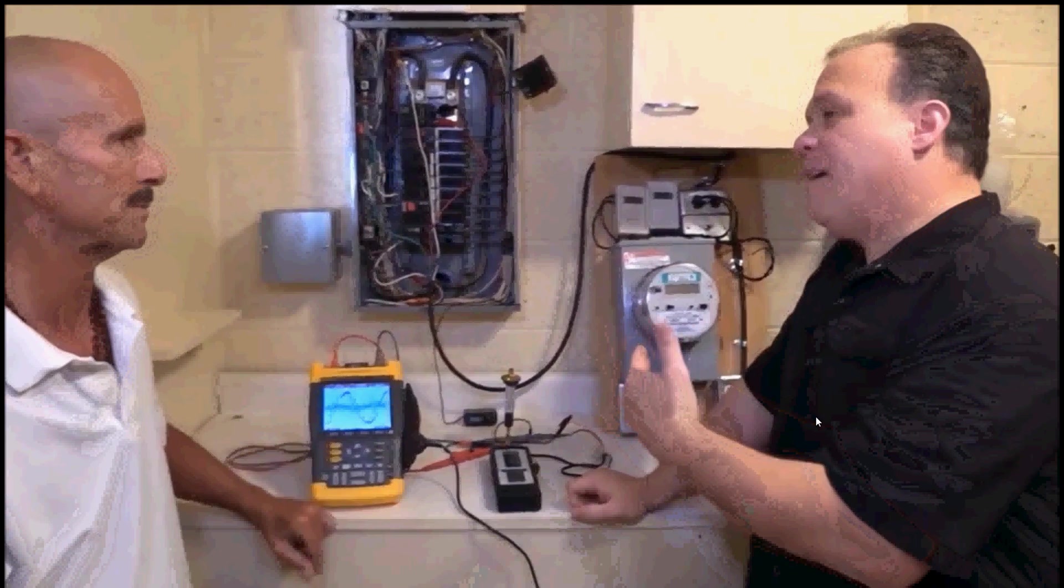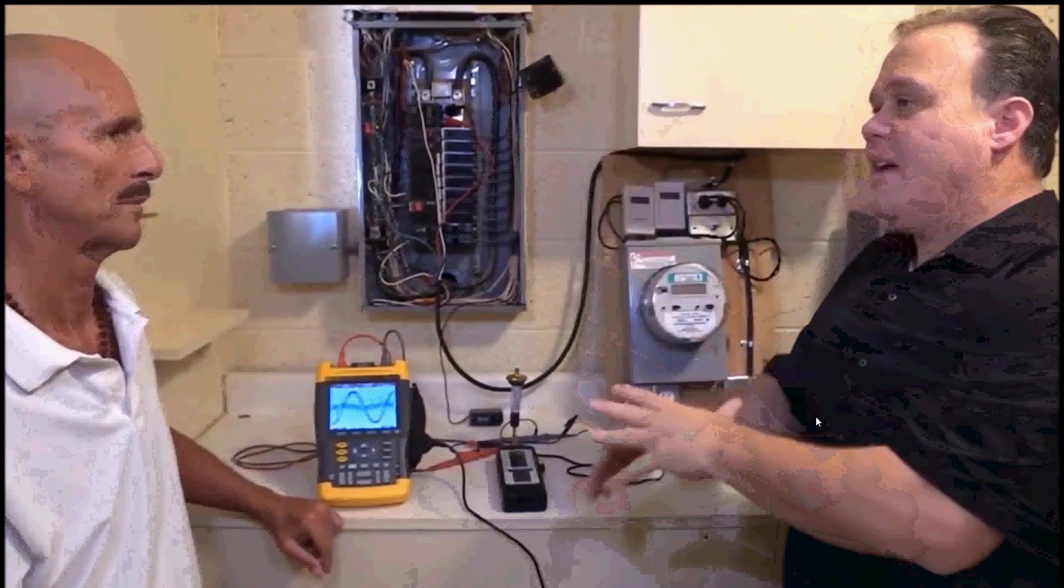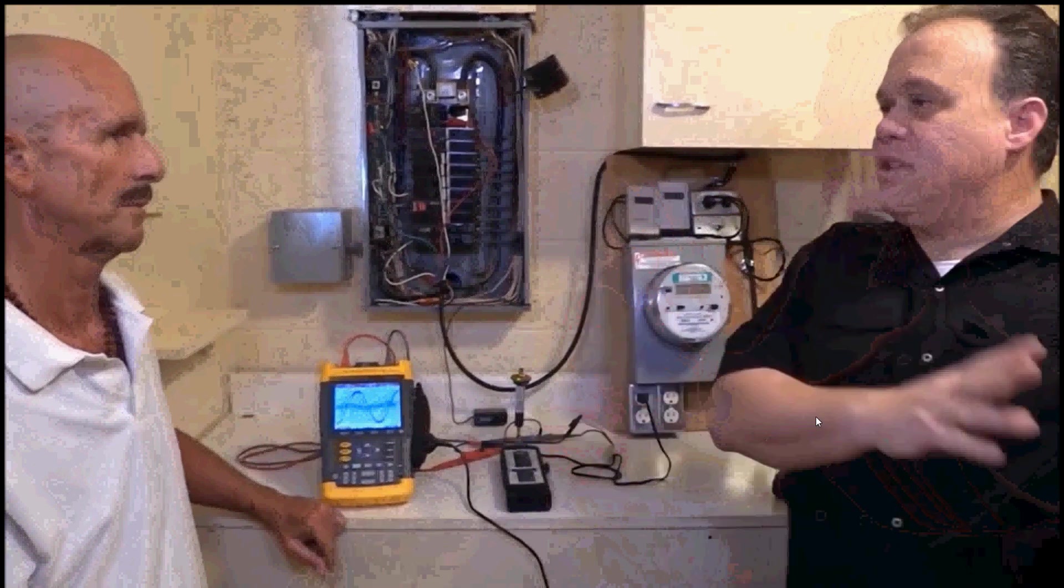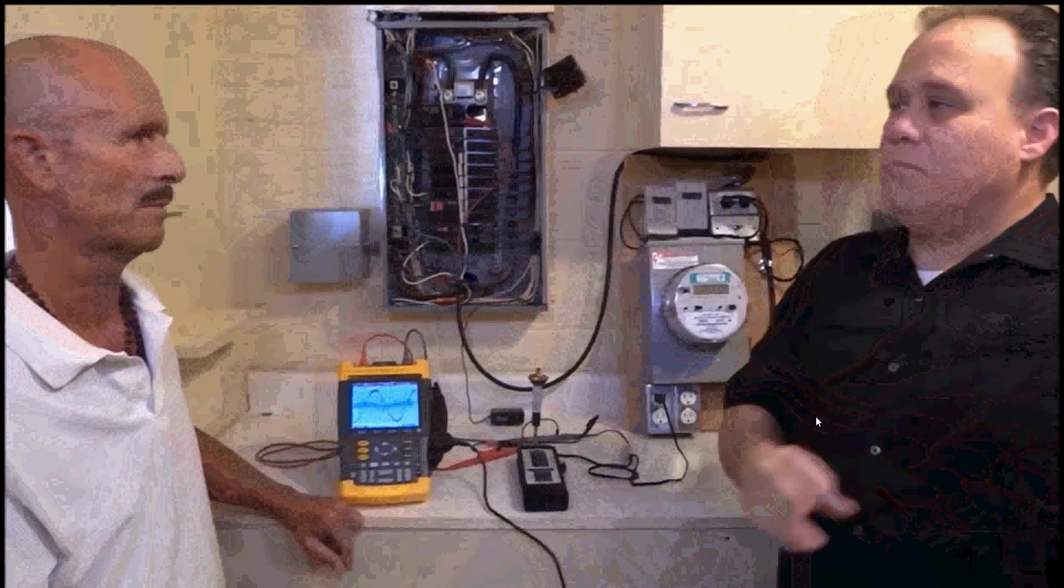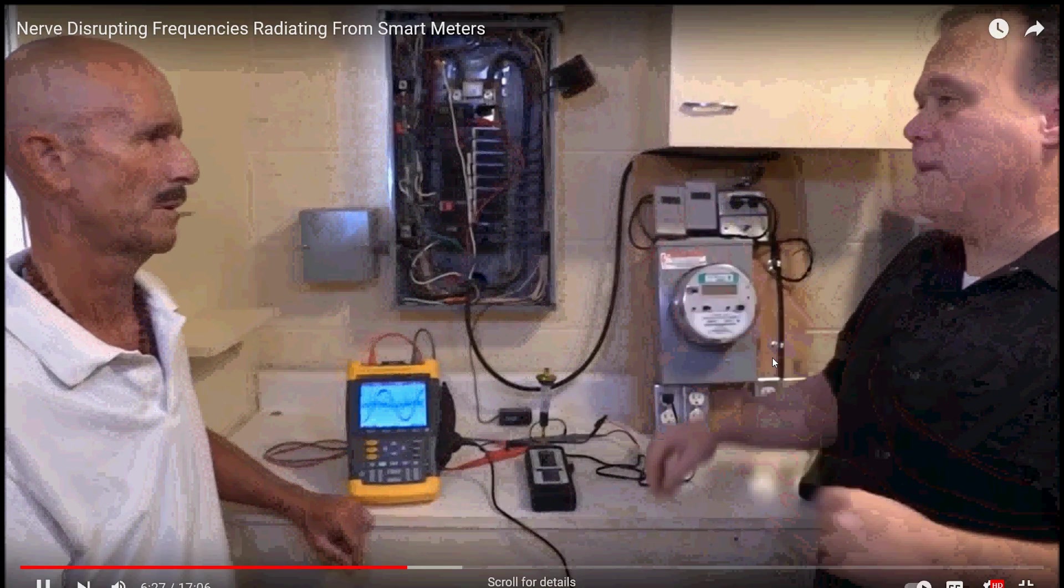So people that are sleeping in a bedroom with a smart meter connected to it are going to have a higher exposure than somebody that's going to sleep in a room on the other side of the house. They're still going to have an exposure, but not as great as one.